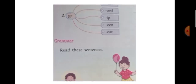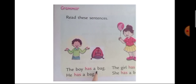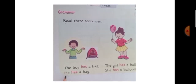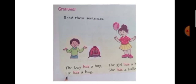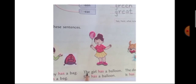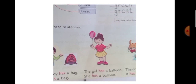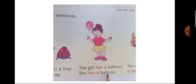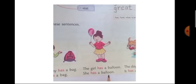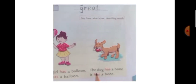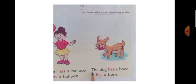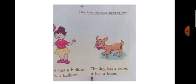Now let us read these sentences. The boy has a bag — he has a bag. For the boy, we have used the word 'He'. And he has a bag. The next sentence is: The girl has a balloon — she has a balloon. For the girl, the word 'She' is used. Next sentence: The dog has a bone — it has a bone. For the dog, 'It' is used.